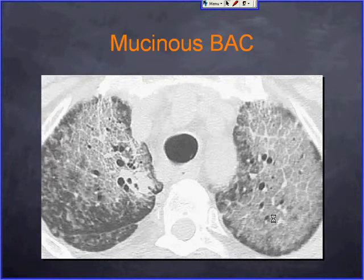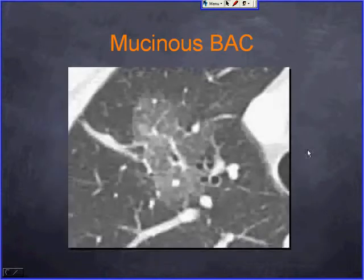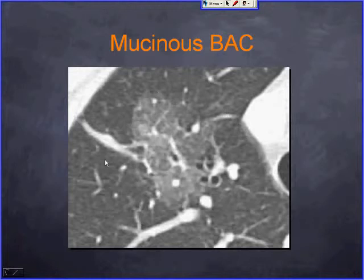Here is a mucinous BAC example: you can see the ground glass opacity, the polygonal-shaped interlobular septal thickening lining secondary pulmonary lobules, and smaller intralobular septal thickening. This is a milder case, but it was eventually proven to be BAC.